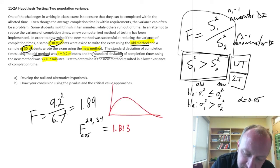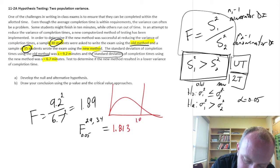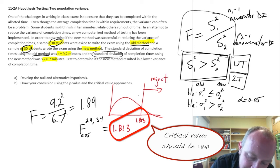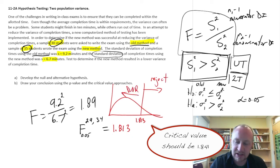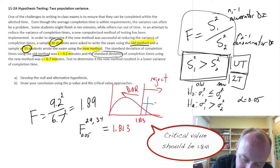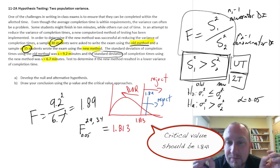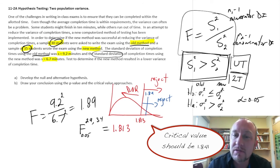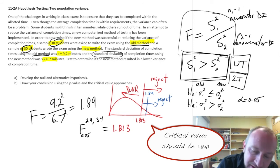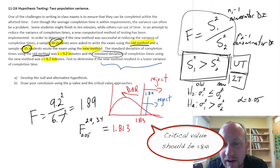Here's the distribution: we have a critical value of 1.813. We will reject if the test statistic is larger than this, and not reject if it's smaller. Our test statistic is 1.89, which falls out in the rejection region. So we reject the null hypothesis and conclude that we have evidence to show that the old method has a larger variance than the new method, which is the same as saying the new method has resulted in a lower variance of completion time.